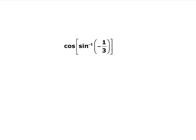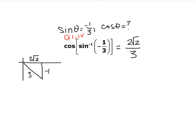Now try: cosine of sine inverse of negative 1/3. That's asking: the sine of what angle equals negative 1/3, and what's the cosine of that angle? Sine inverse exists in quadrants 1 and 4, and since the ratio is negative, you're in quadrant 4. Draw your triangle there. Sine is y over r, so y = −1 and r = 3. Pythagorean theorem gives x = 2√2. Cosine is x over r, so the answer is 2√2 over 3.